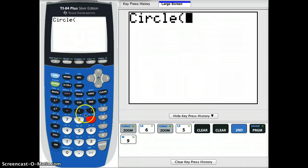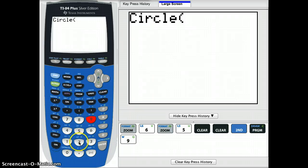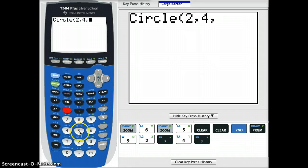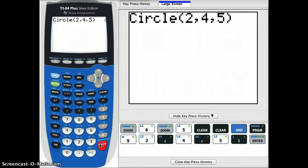In the parentheses you're going to enter the radius preceded by the center. So the center and then the radius separated by commas. So for example, you could do a circle at a center of 2 comma 4 with a radius of 5 units. And then just press enter.